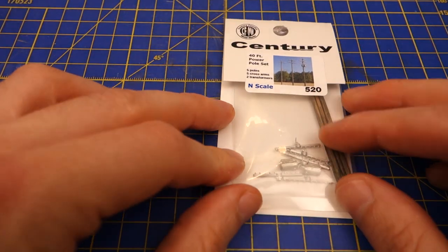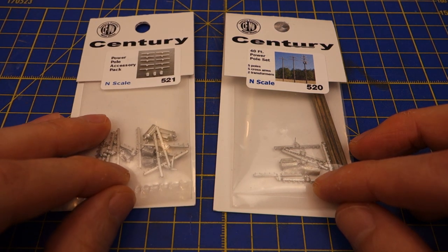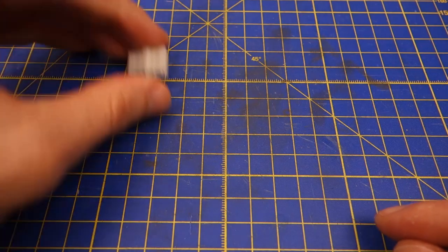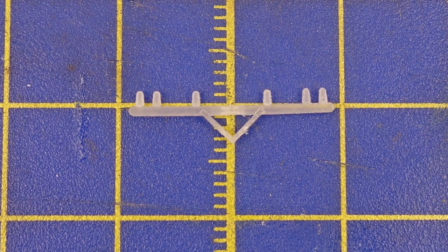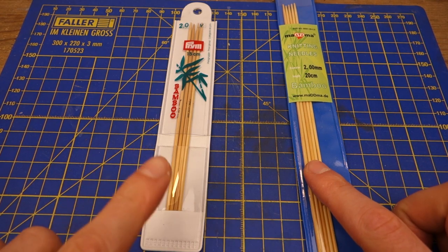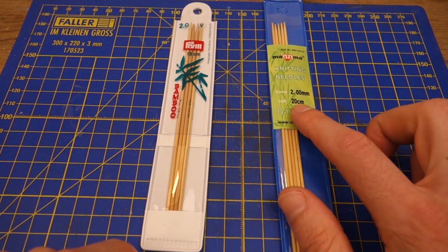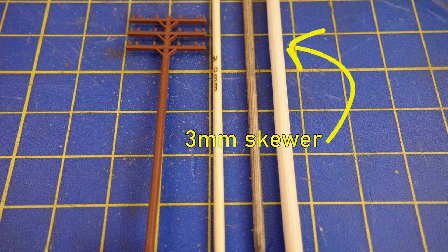Interestingly, Showcase Miniatures offers white metal kits for power poles with cross arms that look a lot like telephone line cross arms and include pole mounted transformers. Another option are 3D printed cross arms and bamboo knitting needles for the poles themselves. The 2mm needles vary between 1.8mm and 2.3mm in diameter depending on the manufacturer and are a good option for modeling utility poles. Bamboo skewers are typically 3mm in diameter and are visibly too thick for utility poles in N-Scale.